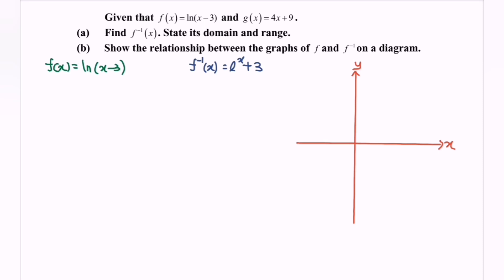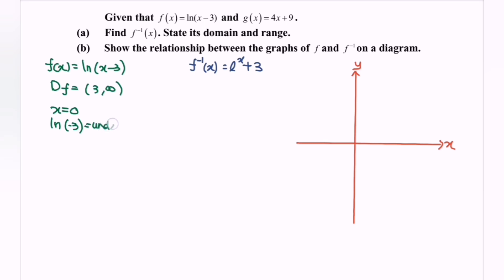Focus on f(x), where the domain is 3 to infinity. Next, find the intercepts. When x equals 0, we get ln(negative 3). Since the domain requires x greater than 3, when x equals 0 the situation is undefined, meaning the y-intercept does not exist.